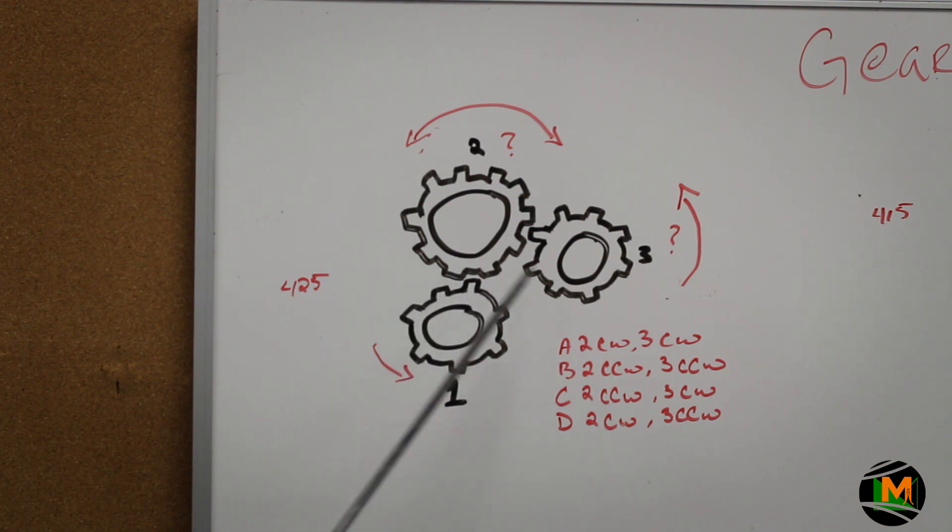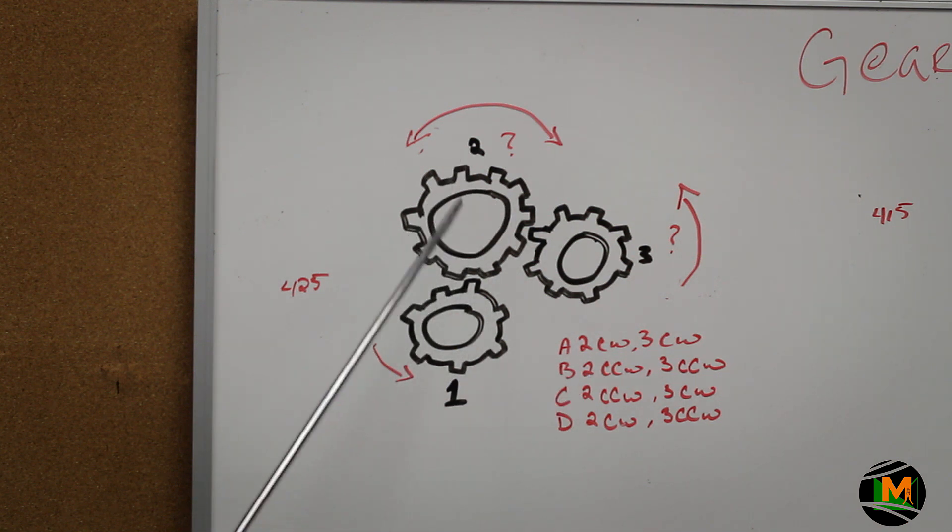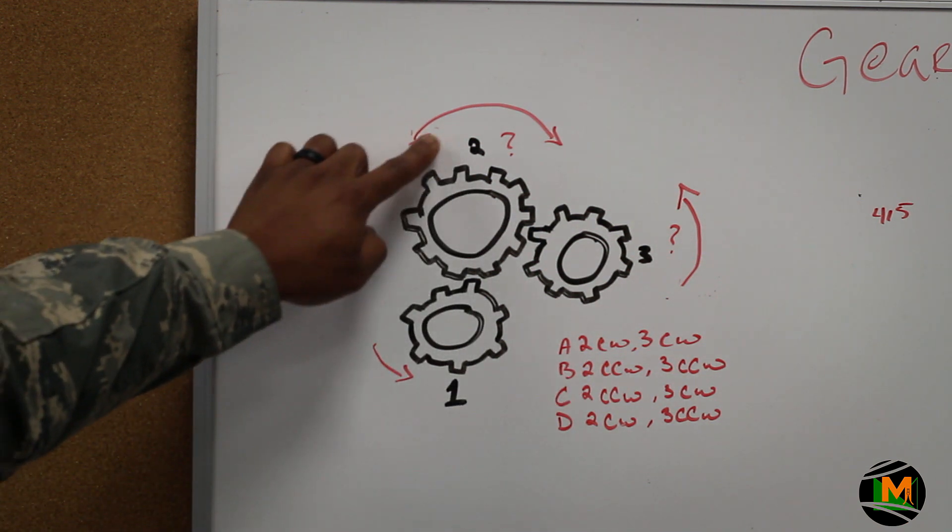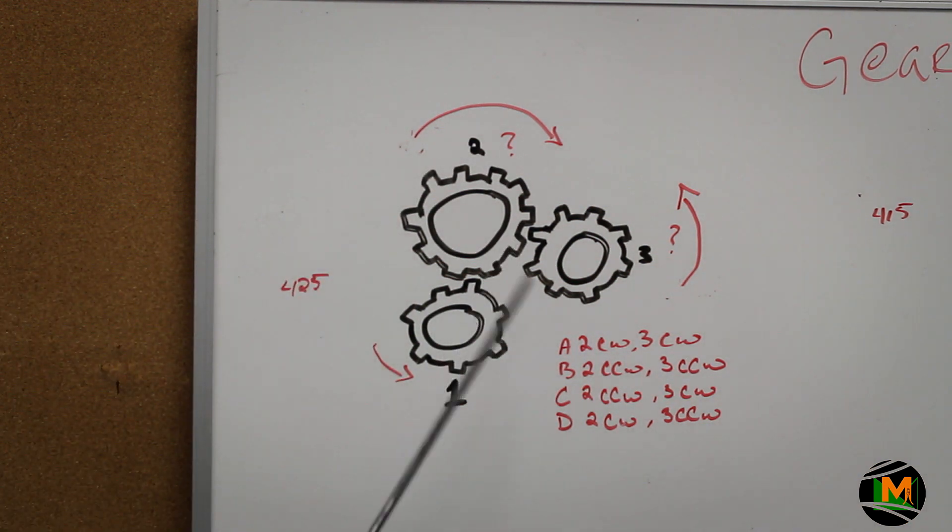Next, if these two are moving in the same direction, the only other option is for this to move in the opposite direction. So gear number 2 would move clockwise and gear number 3 would move counterclockwise. So your answer would be letter D. Gear number 2 moving clockwise and gear number 3 moving counterclockwise.